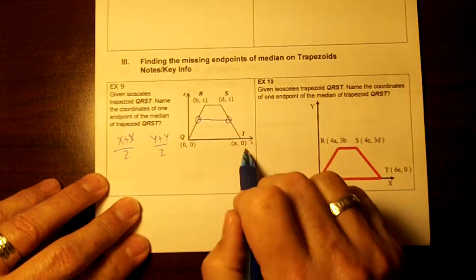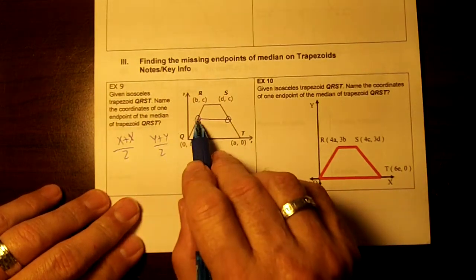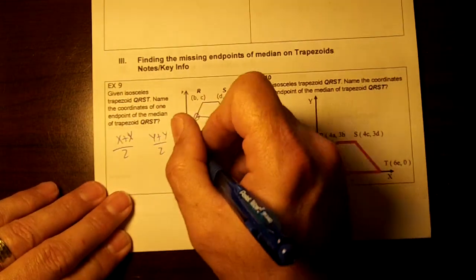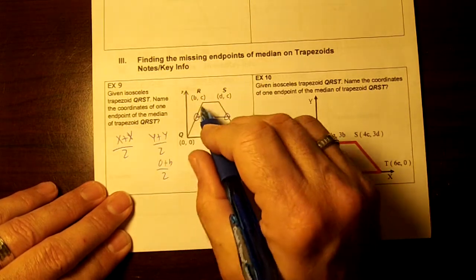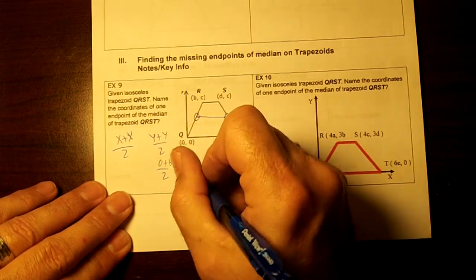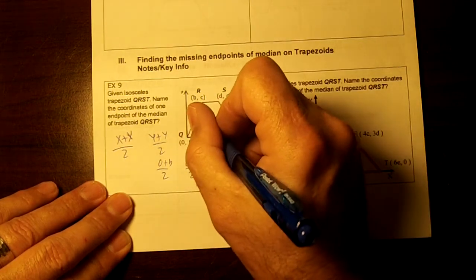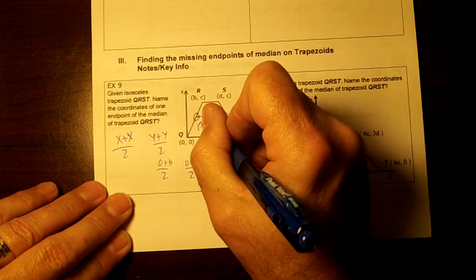Okay, so let's get the midpoint of this. It's 0 plus b divided by 2 and 0 plus c divided by 2. So the midpoint of that, the ordered pair, would be b over 2 comma c over 2.